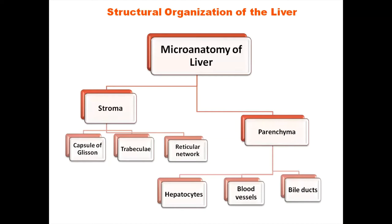In microanatomy, the structural organization of the liver can be divided into two parts: stroma and parenchyma. Stroma is always the connective tissue part, which includes Glisson's capsule. From the capsule we have small trabeculae going within the tissue, and the parenchyma is supported by a framework of connective tissue called the reticular network. So stroma of any gland has a capsule, trabeculae, and reticular framework.